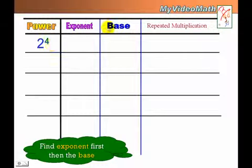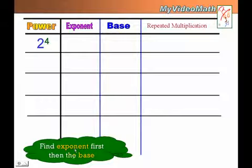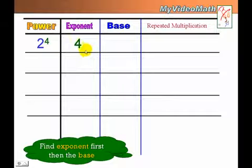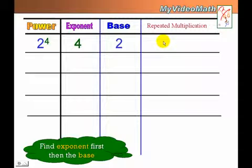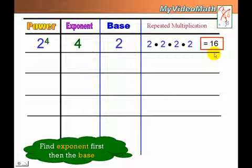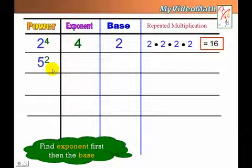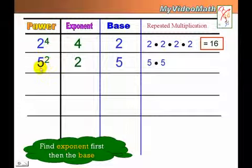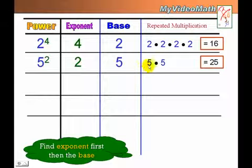In a power, we want to identify the exponent and the base, and know how to represent that in repeated multiplication. We find the exponent first, then the base. The exponent of this power is 4, the base is 2. Repeated multiplication is 2 times 2 times 2 times 2, which equals 16 — the value of 2 to the fourth power. Another example: 5 squared — exponent is 2, base is 5, and repeated multiplication is 5 times 5, equal to 25.